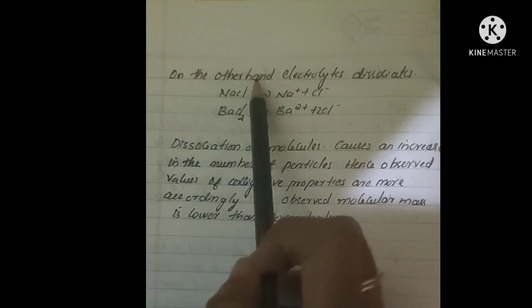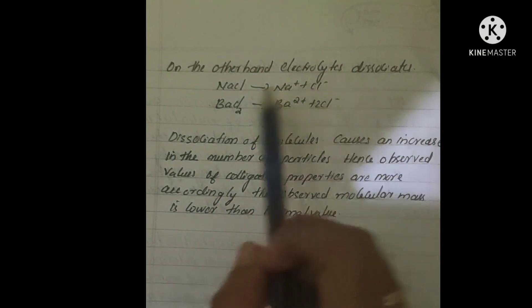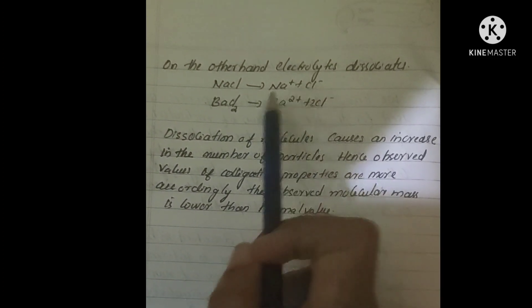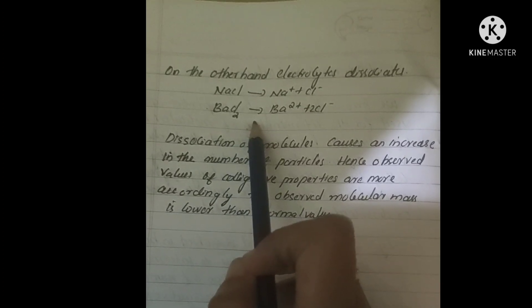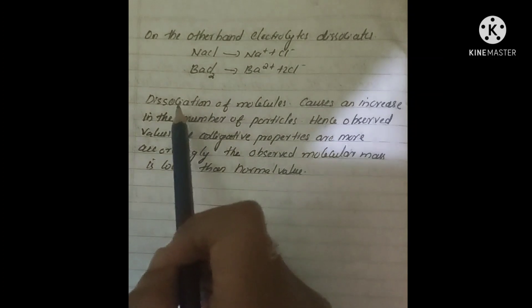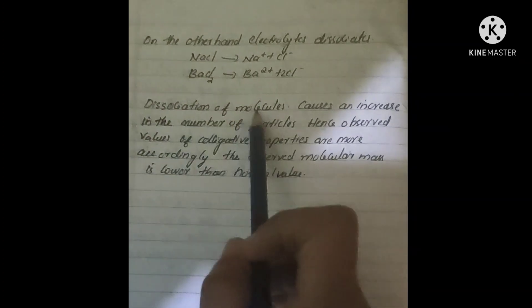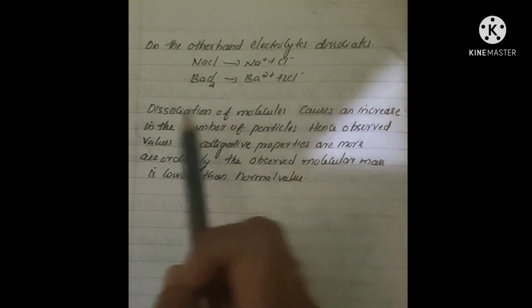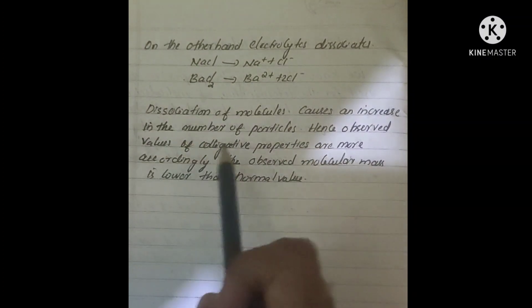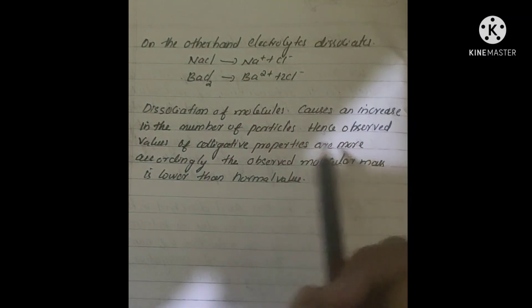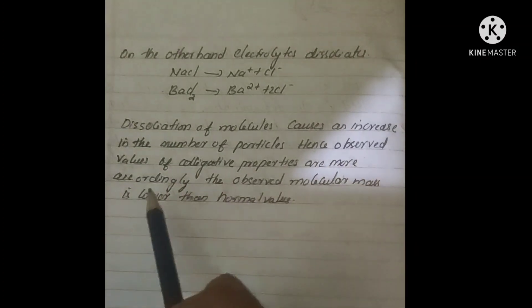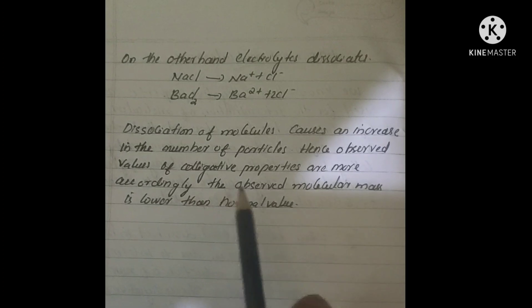On the other hand, electrolytes dissociate. NaCl dissociates into Na plus and Cl minus, and BaCl2 barium chloride dissociates into Ba2 plus plus 2 Cl minus. Dissociation of molecules causes an increase in number of particles. Hence, observed value of colligative properties are more. Accordingly, the observed molecular mass is lower than the normal value.